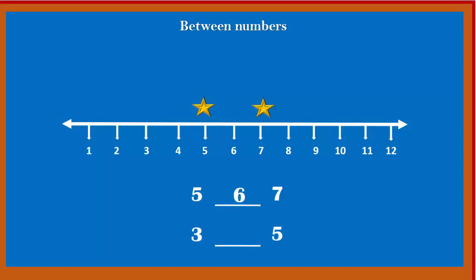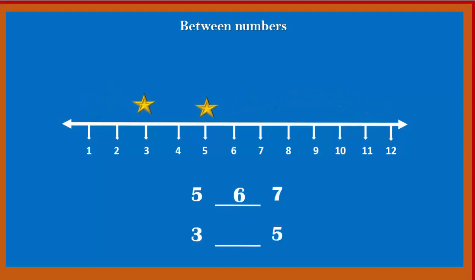Let's see the next example: 3 and 5. Which number comes between 3 and 5? Yes — it's number 4.